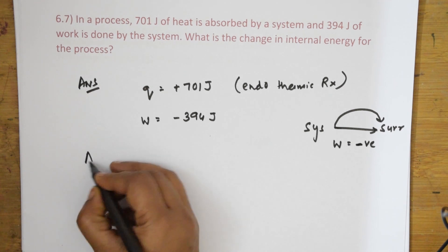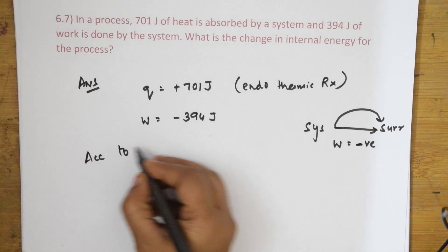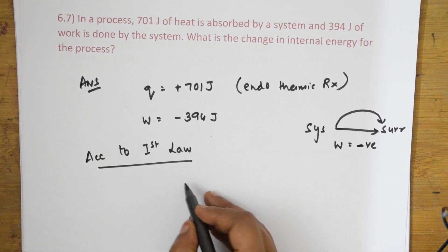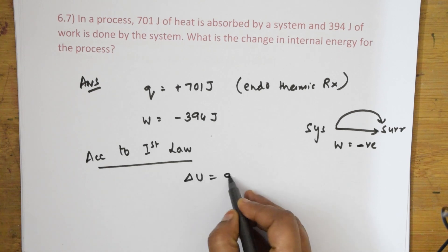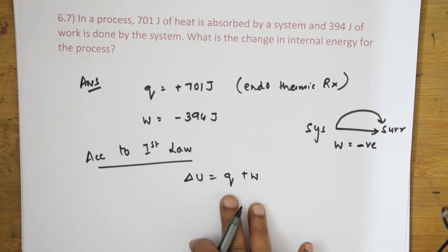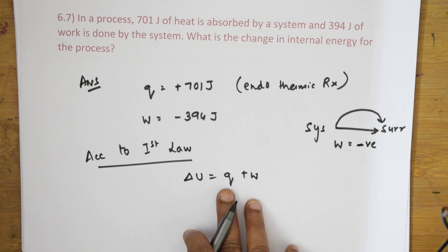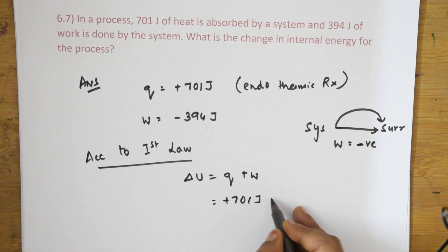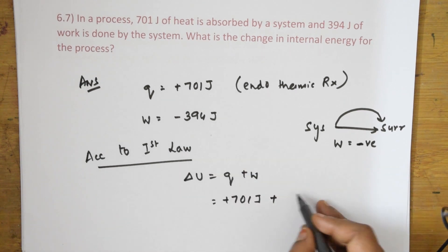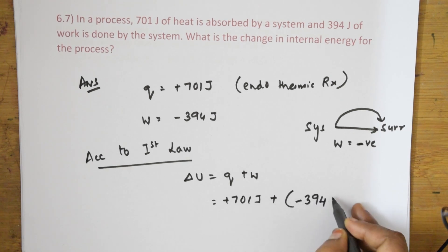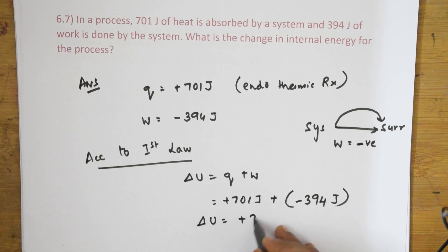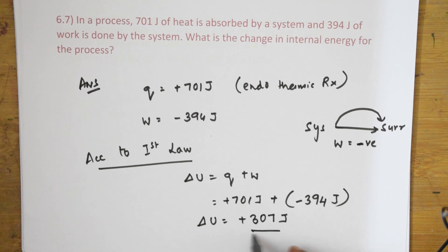According to the first law of thermodynamics: ΔU = q + w. The q value is +701 joules, and the work done by the system is −394 joules. So ΔU = 701 − 394 = +307 joules.